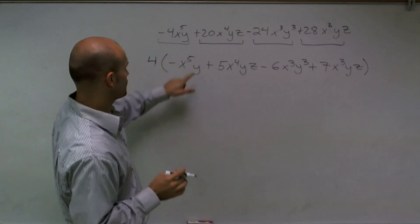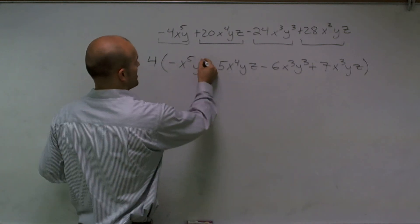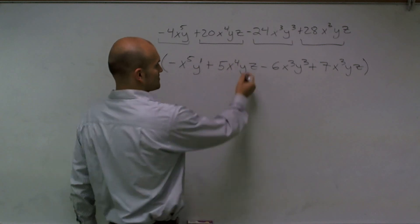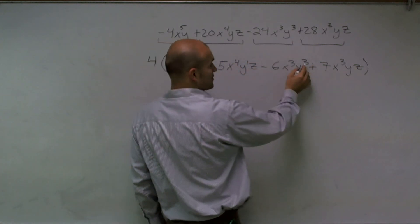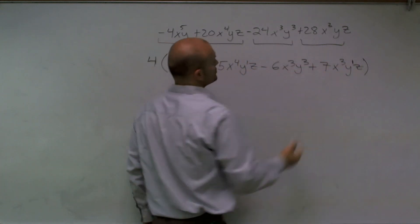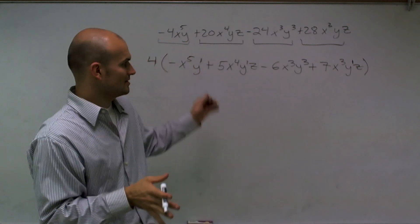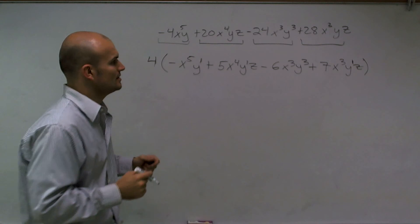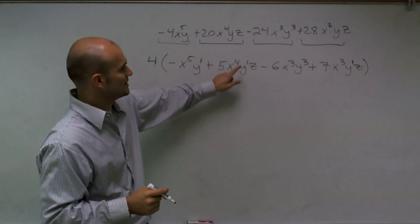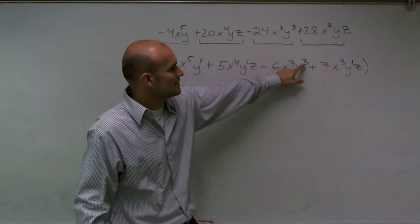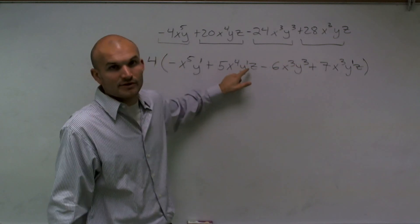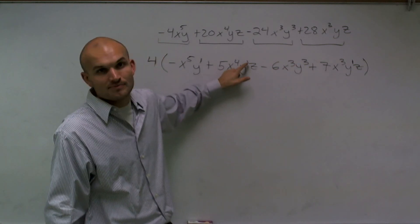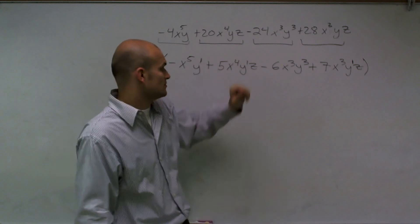So now I look at, I can factor out an x cubed, and let's see the largest y. Here has a y to the first power. Here's a y to the first power. Y to the third power, but again, I have to use the smallest term that I have. That's going to be the largest I can factor out. So I can now factor out an x cubed and a y to the first. I can't factor out a y cubed because I don't have three y's. I only have y to the first power. So the largest y I can factor out is a 1.